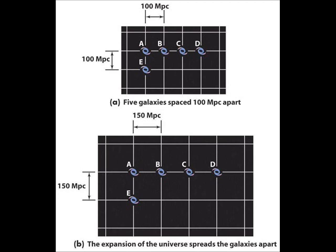If we compare galaxy C, it starts off being 200 megaparsecs away, but then after some time it is 300 megaparsecs away — a difference of 100 megaparsecs. So over the same amount of time, galaxy C will have appeared to move twice as far as galaxy B. Likewise, galaxy D starts off at 300 megaparsecs away, and after some time it's 450 megaparsecs away — a difference of 150 megaparsecs — so it's three times as much change as between A and B. Three times further away, moving three times as fast.